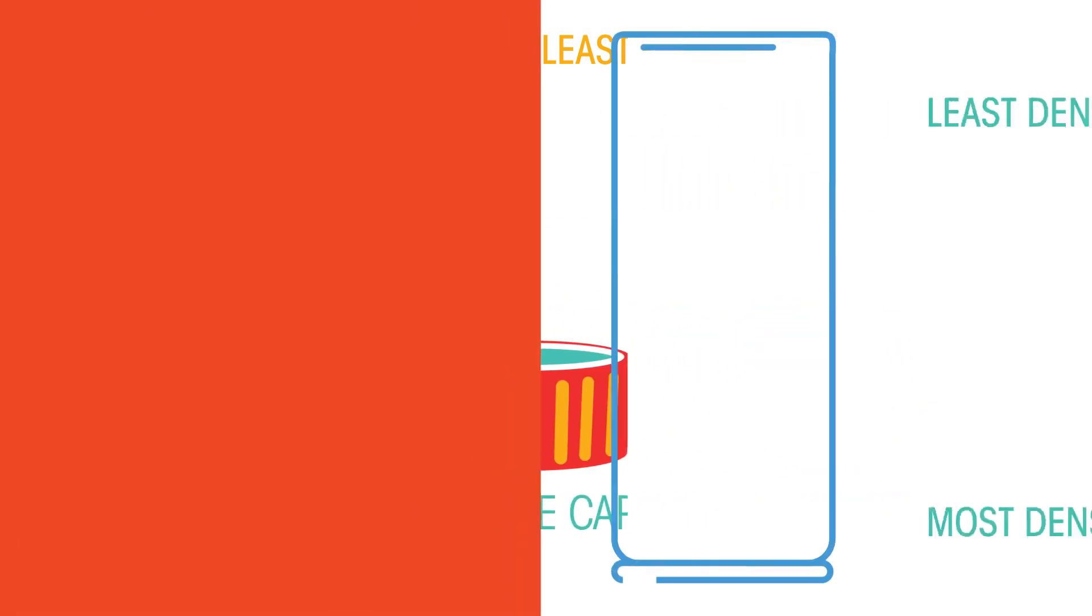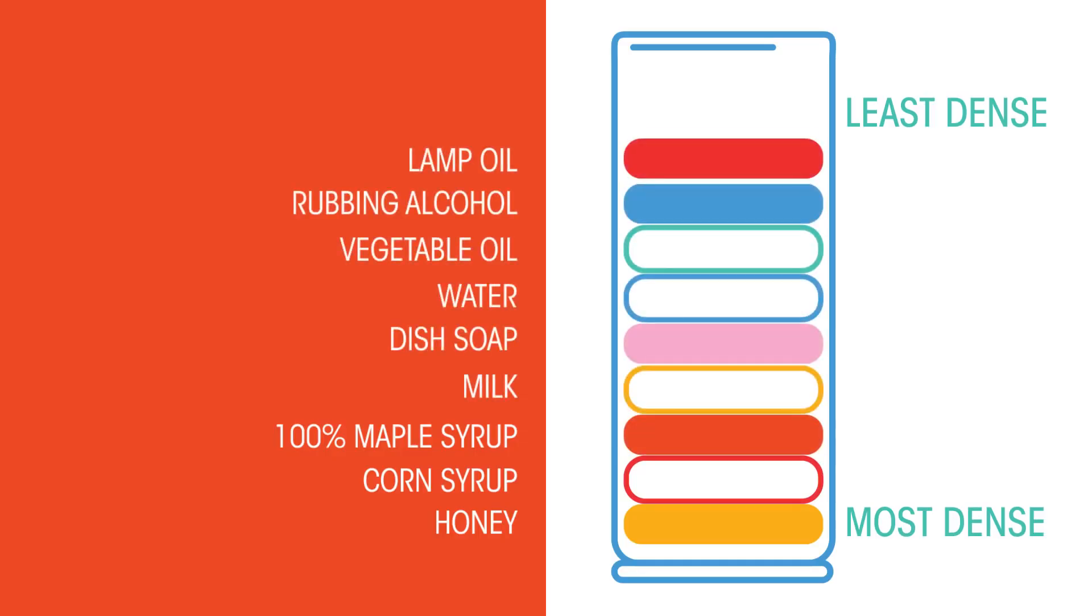Did you know that liquids and gases also have different densities? Look at this density tower of different liquids. The honey is most dense so sinks to the bottom, whereas milk is in the middle and lamp oil is the least dense.